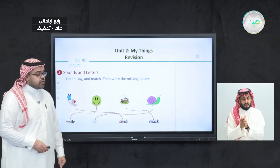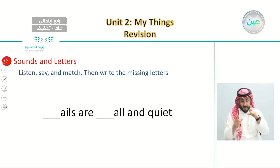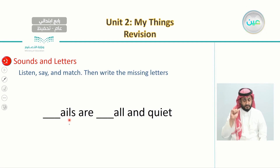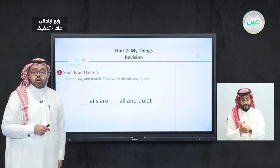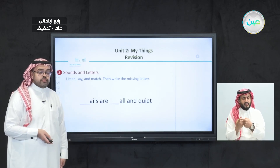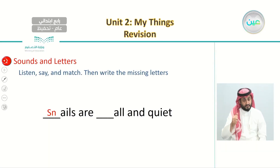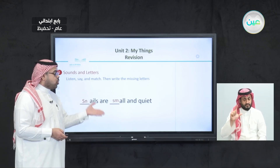The last part is writing the missing letters. We have a word ending in A-I-L and another ending in A-double-L. These come from our four words. The first word is 'snail,' and we can say about snails that they are small and quiet.